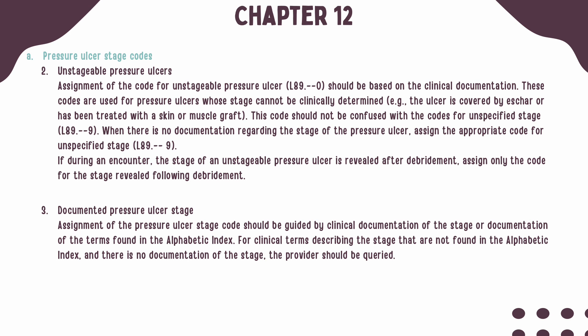If during an encounter the stage of an unstageable pressure ulcer is revealed after debridement, only the code for the stage revealed should be assigned. The coder's assignment of the pressure ulcer stage should be guided by clinical documentation of the stage or by terms found in the alphabetic index. For clinical terms not found in the alphabetical index and where no other documentation of the stage is present, the provider should be queried.